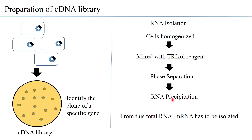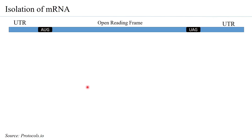The RNA obtained at this stage is the total RNA. However, for cDNA library formation, what we are interested in is the mRNA. Therefore, from this total RNA, mRNA will have to be isolated.